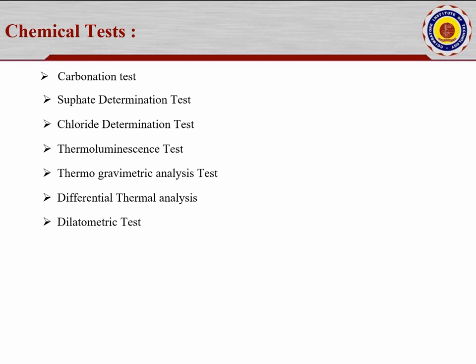Group four is chemical tests: carbonation test, sulfate determination, chloride determination, thermoluminescence test, thermogravimetric analysis, differential thermal analysis, and dilatometric test. These involve taking samples to be tested in the laboratory with chemicals, or pouring acid in the field to identify reaction changes, developing cracks, or powdering of materials. This is how these chemical tests are conducted.